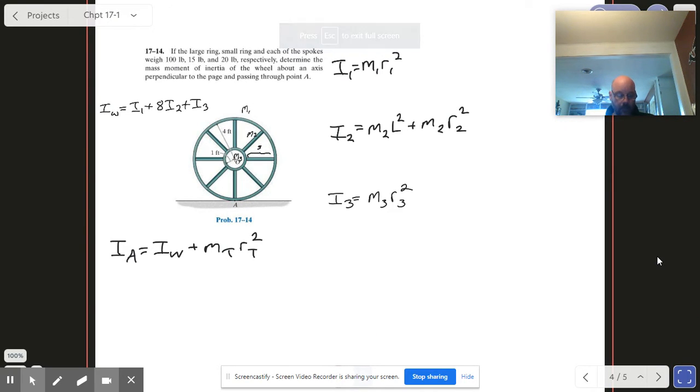Okay, so this is question 17-14 and it's going to be another illustration of how we can take a complicated object and reduce it to individual components, add up those individual components, and that's going to give us the total moment of inertia for the thing.